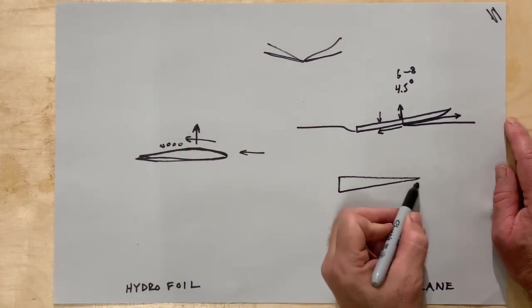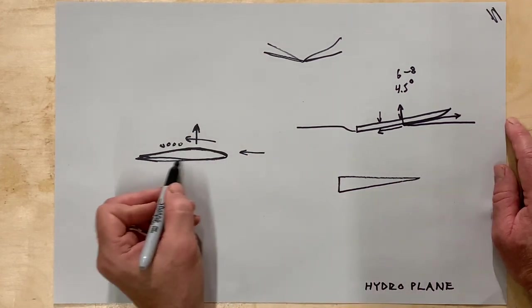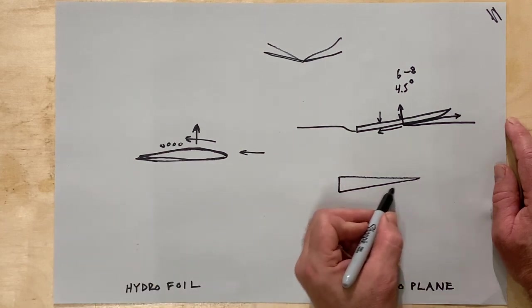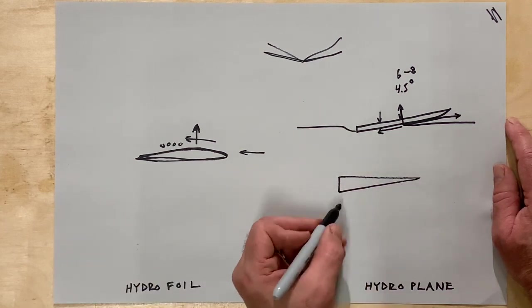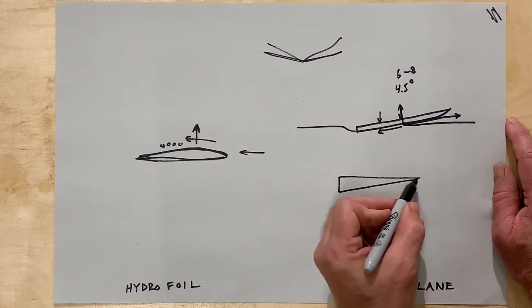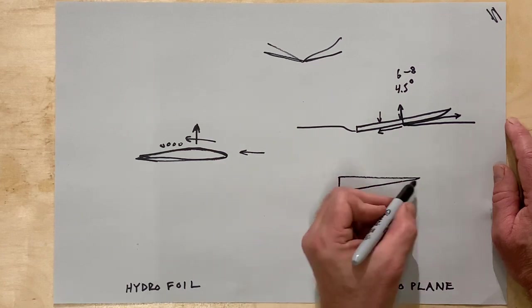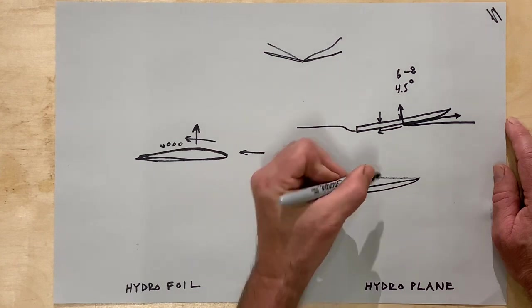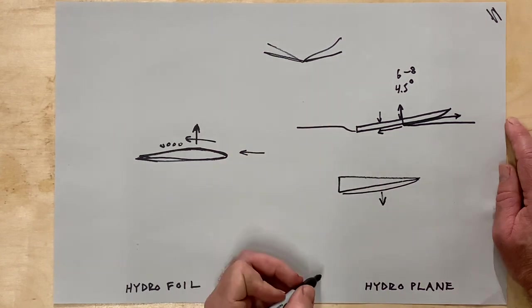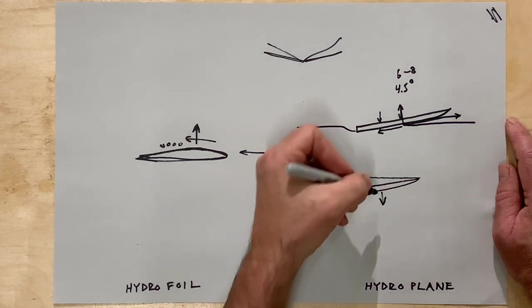So why is there no curvature on this surface and there's curvature here? Why wouldn't you like put curvature here? So anytime that you put curvature, if you put curvature on the bottom, you'd actually get downward suction, so that would eliminate the upward force.